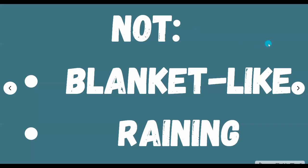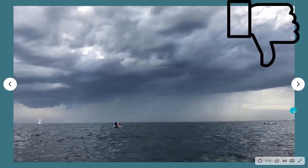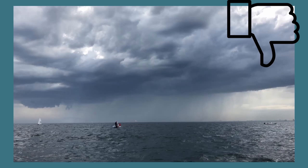The other type of cloud that this does not apply to would be blanket-like clouds, also called stratus clouds, or clouds that are raining. These clouds have other properties that cause different types of wind, but not necessarily what we're talking about here. Here's an example of a rain storm or a rain cloud — raining clouds create a downdraft, and non-raining clouds create an updraft.